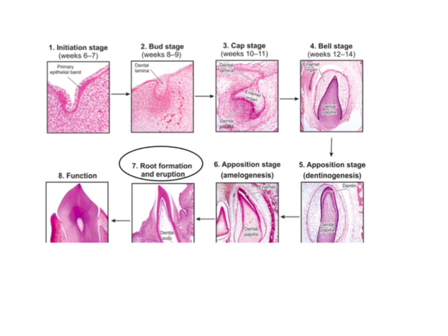The entire process of tooth development occurs in a set of stages. Initially you have the placode which is formed. This placode forms the dental lamina as well as the vestibular lamina. The vestibular lamina gives rise to the vestibule, whereas the dental lamina gives rise to the teeth. From the dental lamina, you have a growth which looks like a bud, and that is why it is called the bud stage.